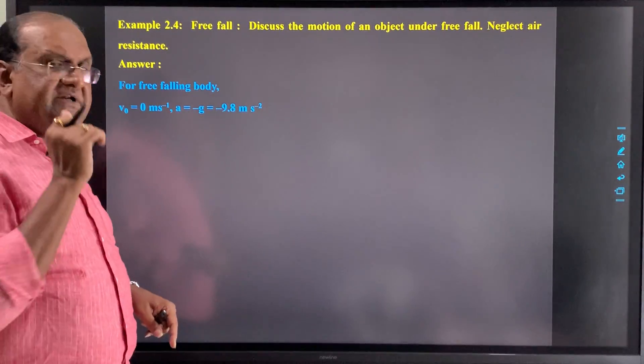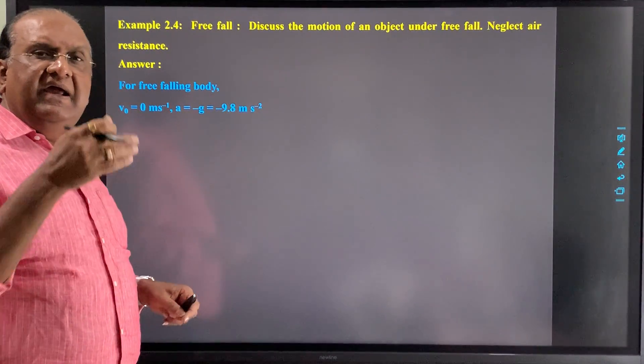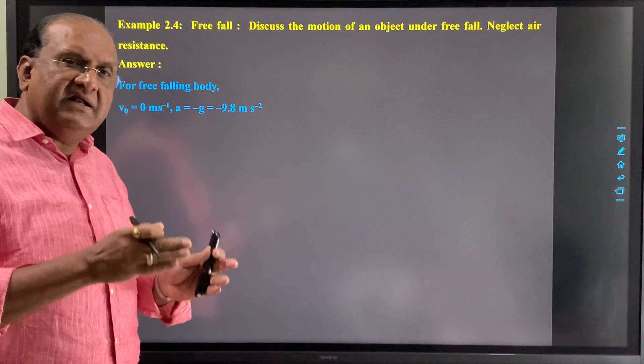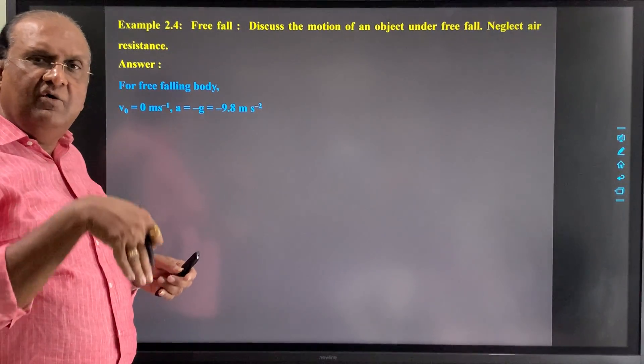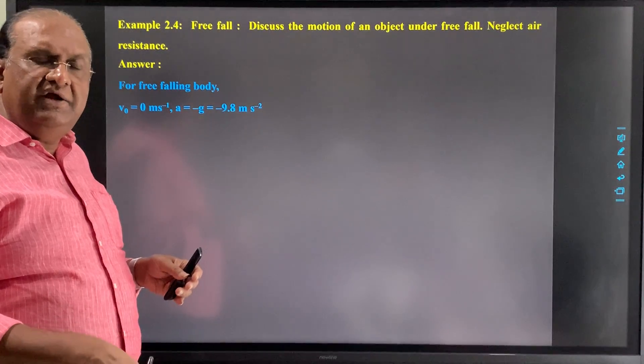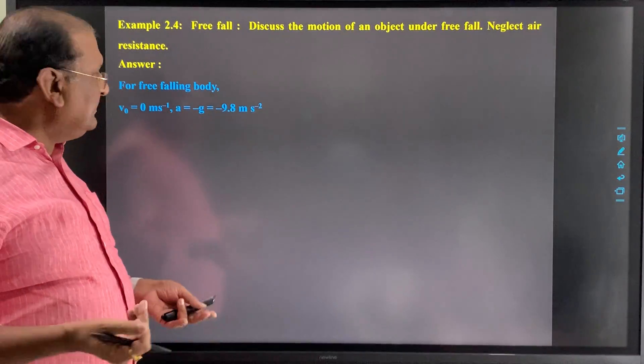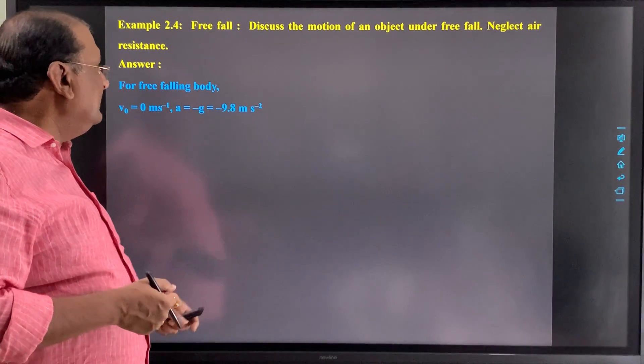So its initial velocity, that is zero always, and acceleration, that is acceleration due to gravity, it is downward. Here we consider downward as negative direction, upward as positive. Therefore we take a equal to minus g, that is minus 9.8.